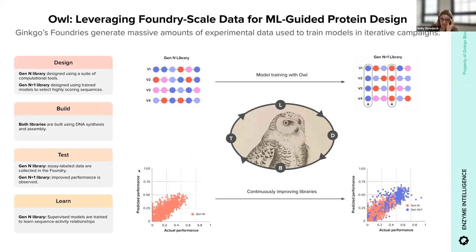In a typical iterative workflow, a protein variant library design is made using a number of computational tools — we'll call this a Gen N library. This library is then built and experimentally tested in the foundry to generate assay-labeled data sets. We now have a data set where we have a set of related but slightly perturbed protein sequences from the library, along with their performance data — how well they behaved in an experimental test. So you have a protein sequence to performance data set.